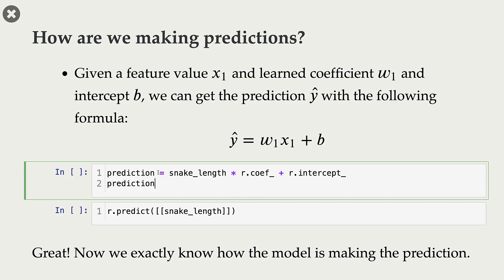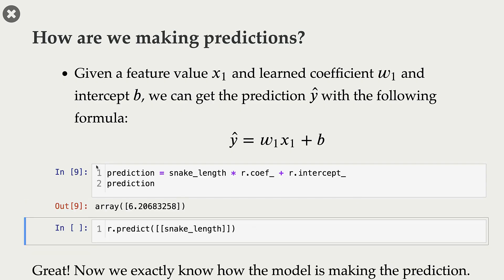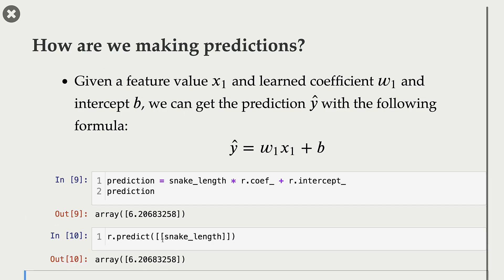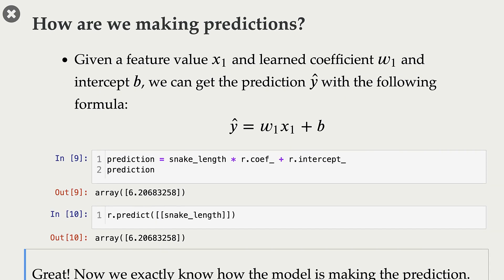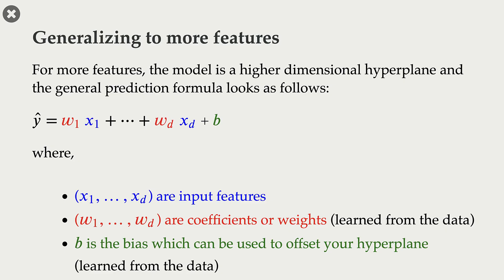In our toy example, we had only one feature, and our model learned a coefficient associated with that feature and the bias term. This generalizes to more features. Suppose you have d features in your dataset and you train a linear regression model. The model would learn d different coefficients, one associated with each feature, and it will also learn the bias term.